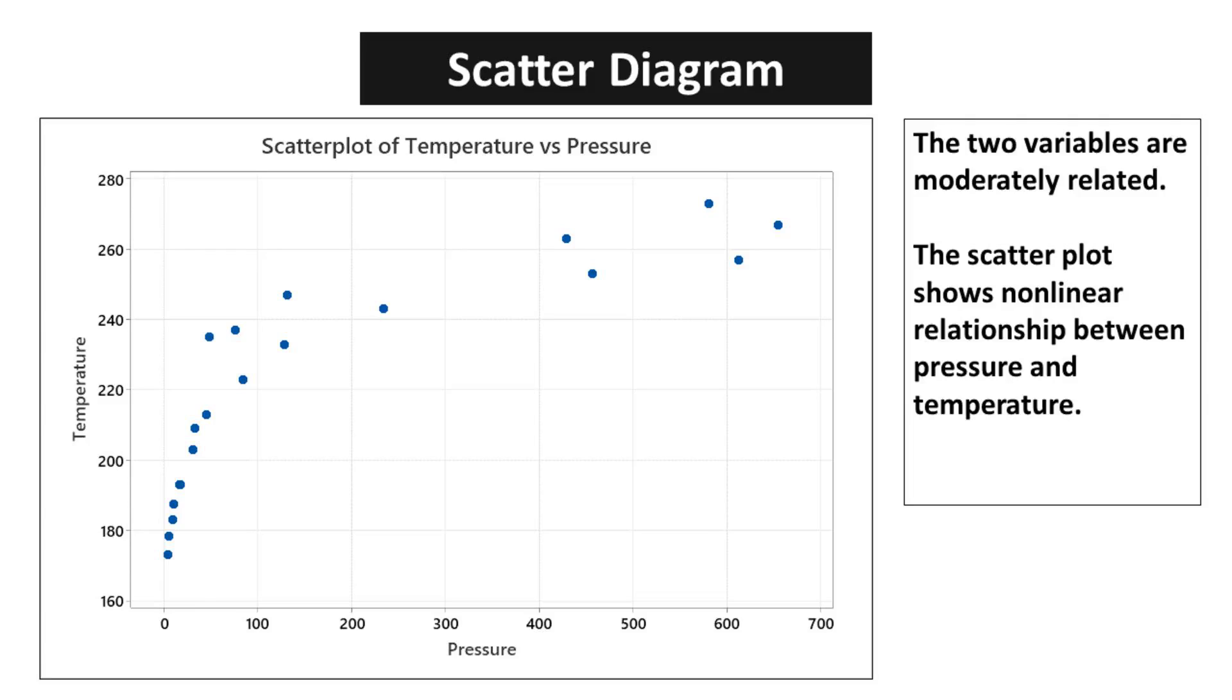This means that the relationship between pressure and temperature is not a simple straight line, but rather a more complex curve. Recognizing and understanding this nonlinearity is vital for accurately predicting and controlling the behavior of our systems.